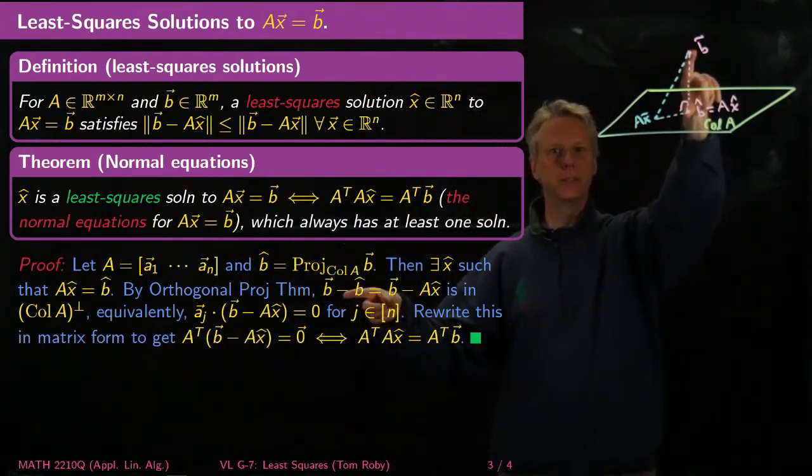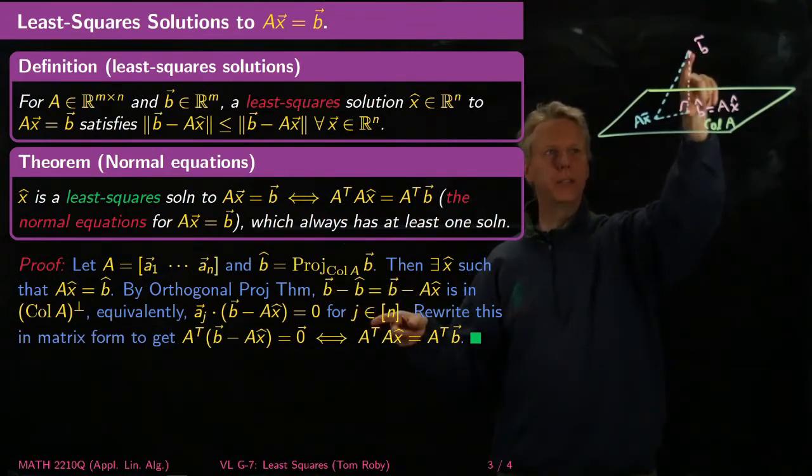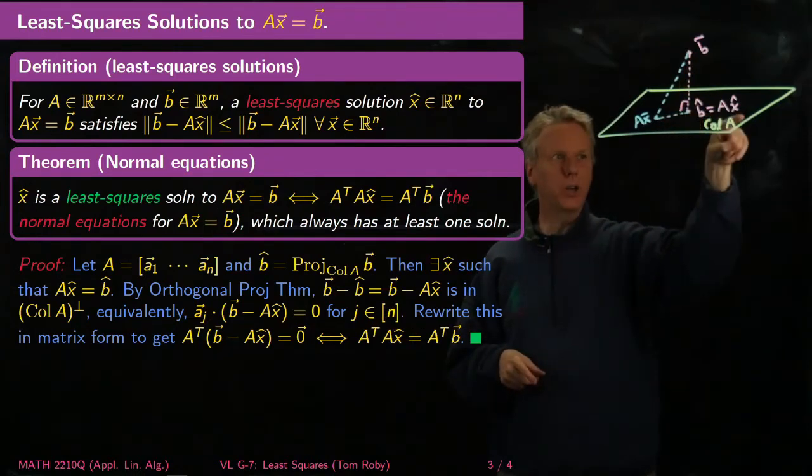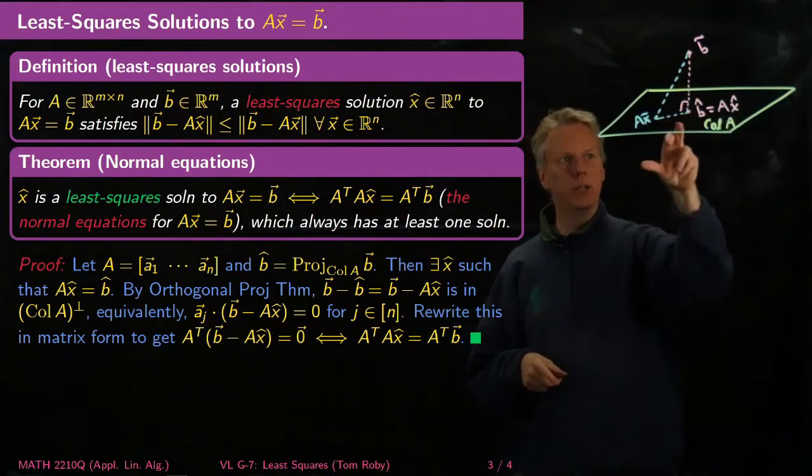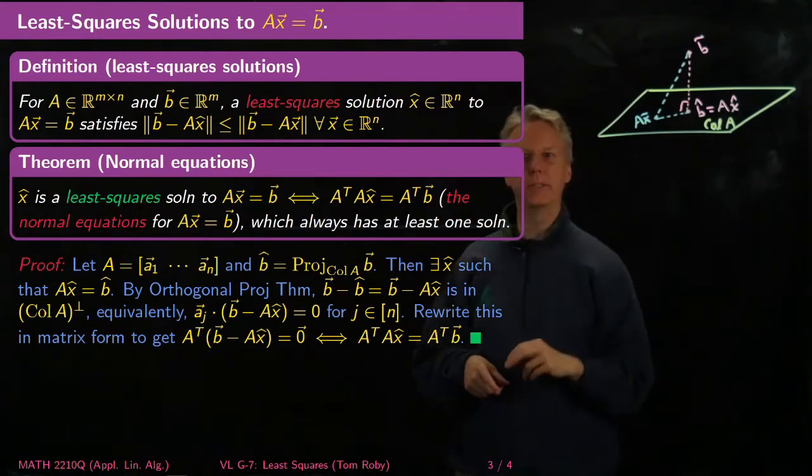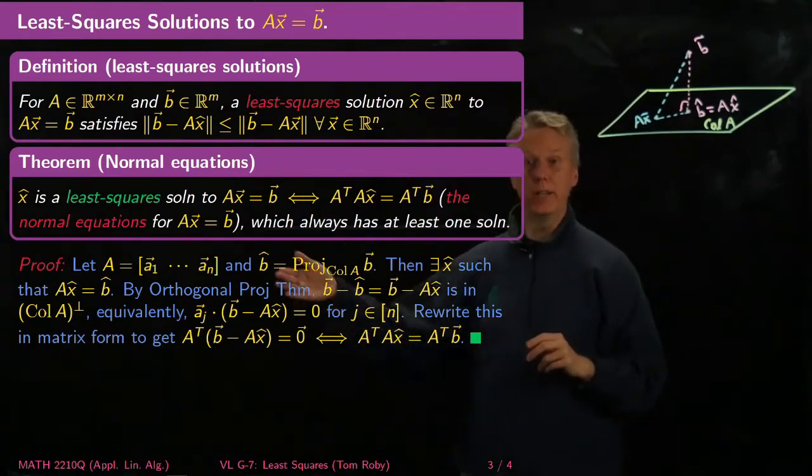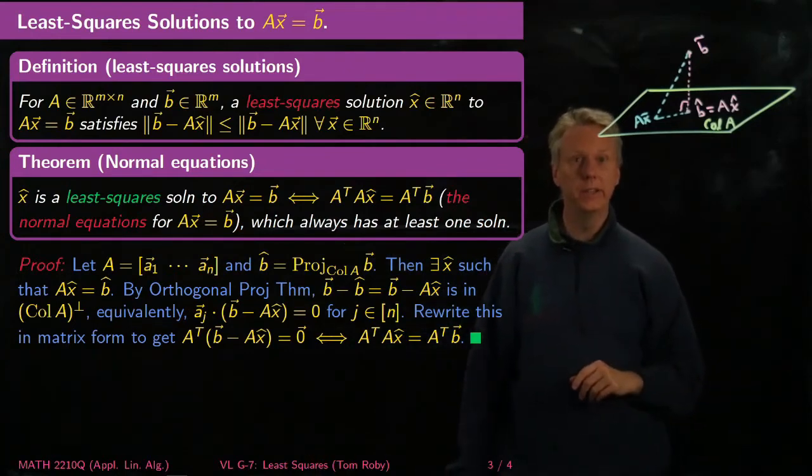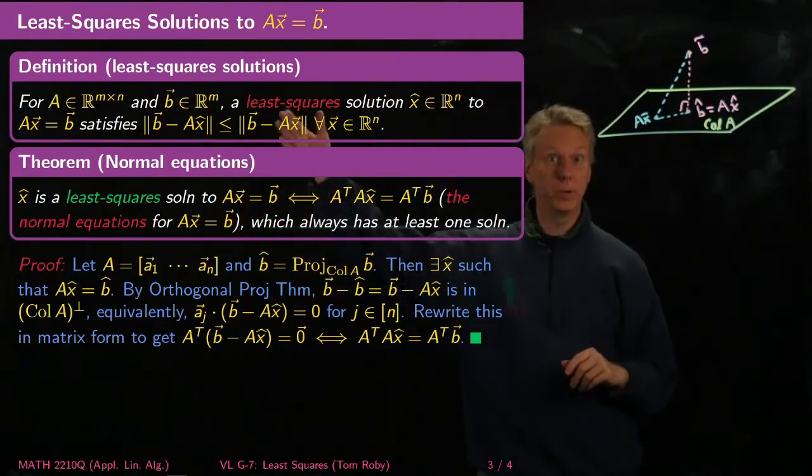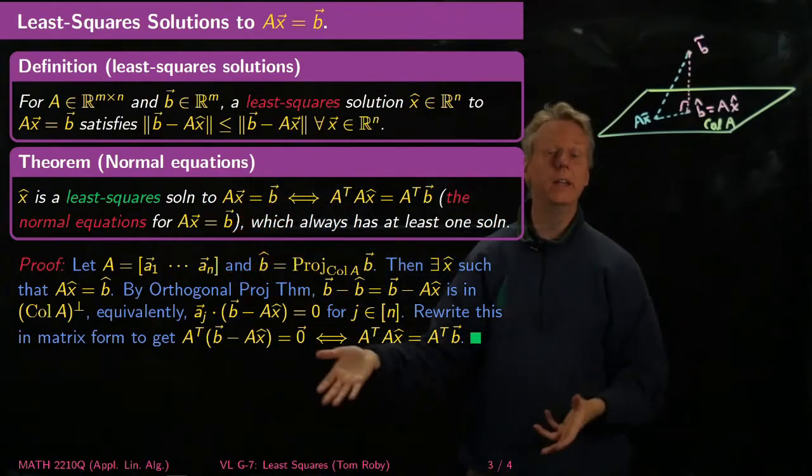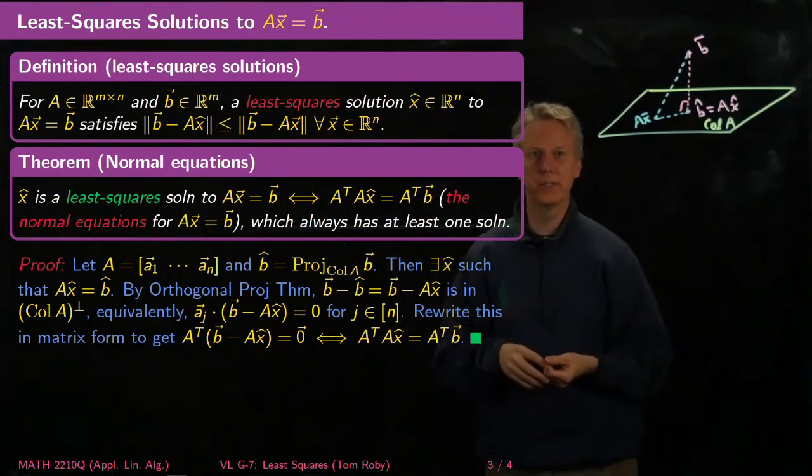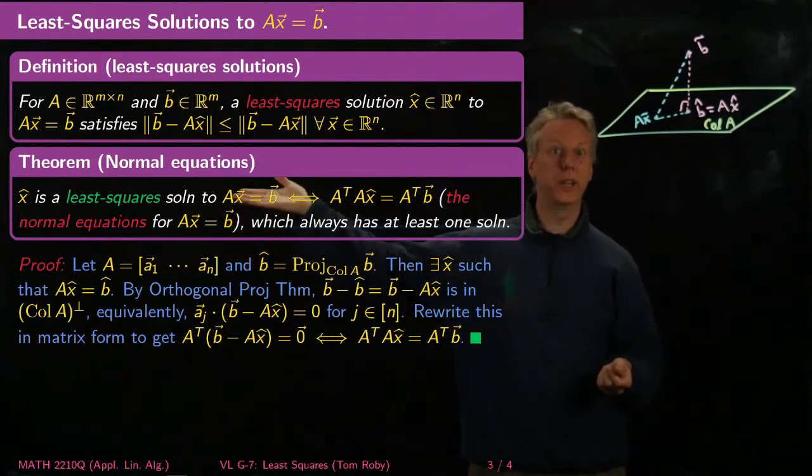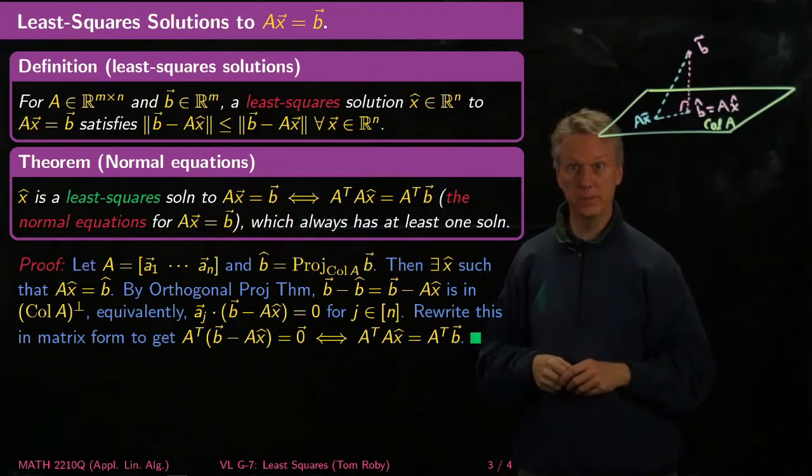By the orthogonal projection theorem, this distance is the minimum. But I want to think about this. This is actually perpendicular to the column space. So to be perpendicular to the column space, that means it needs to be perpendicular to everything, every column of A. And conversely, if it's perpendicular to every column of A, it will be in the column space, because that's enough to guarantee that it's perpendicular to any linear combination of the columns.